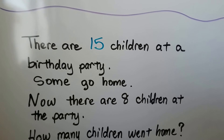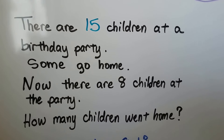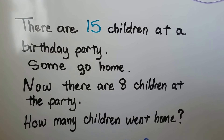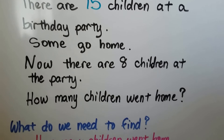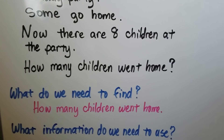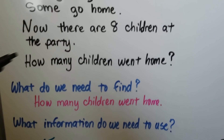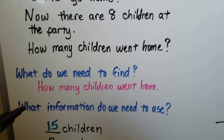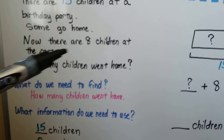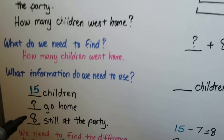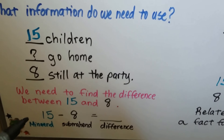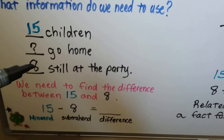There are 15 children at a birthday party. Some go home. Now there are 8 children at the party. How many children went home? We need to find how many children went home. We need to use that there were 15 children and 8 children are still at the party. We don't know how many went home — that's what we need to find. We need to find the difference between 15 and 8.